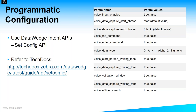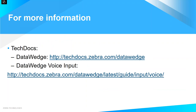Voice input settings can also be configured programmatically with DataWedge intent APIs, particularly the Set Config API. This table lists the parameters that can be passed into the API to control all voice input options previously discussed. For more details, refer to the documentation on the tech docs site with the link provided.